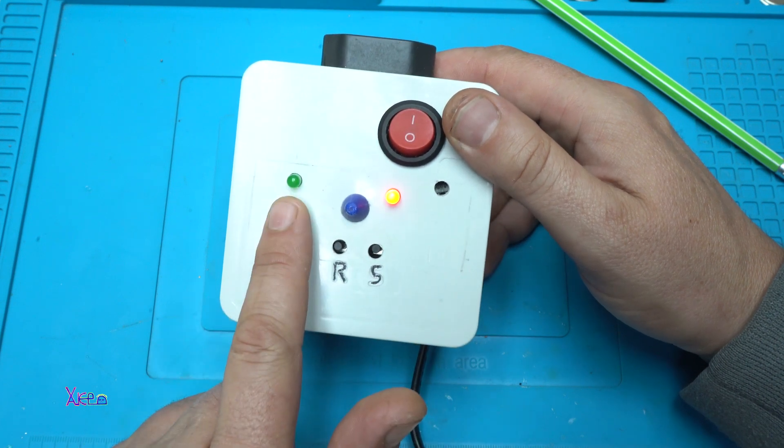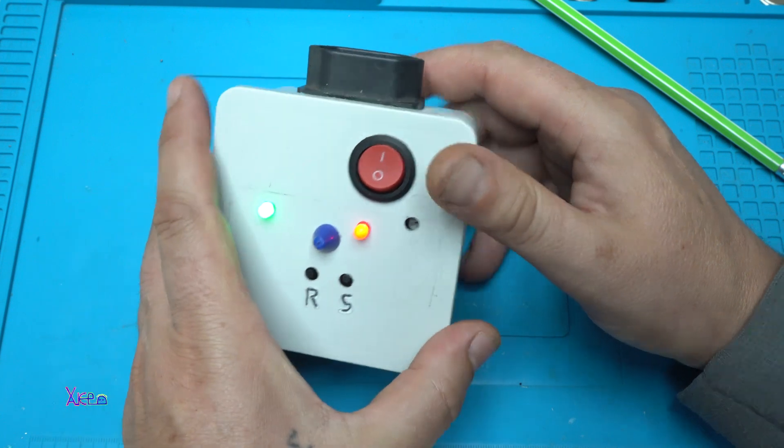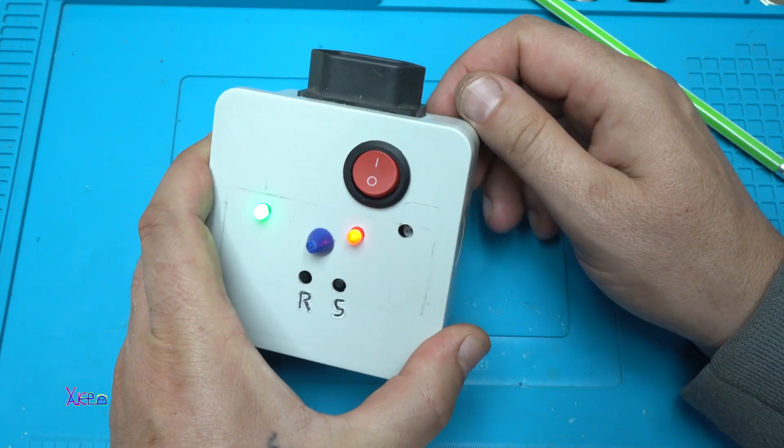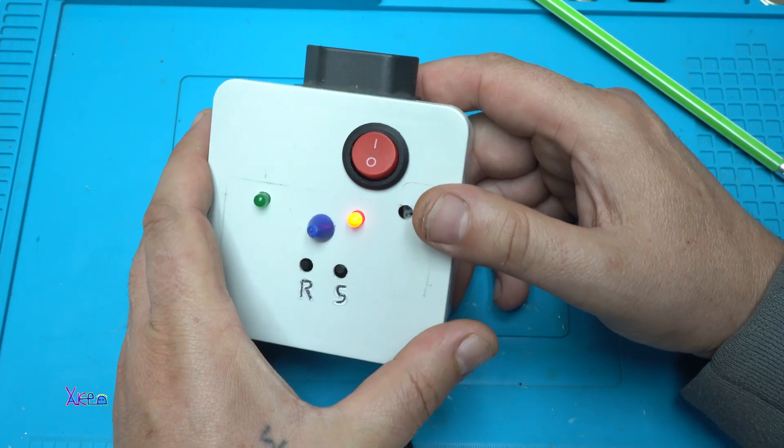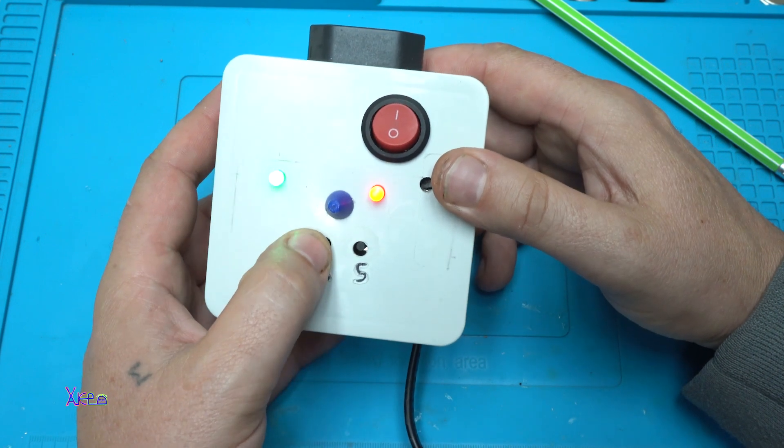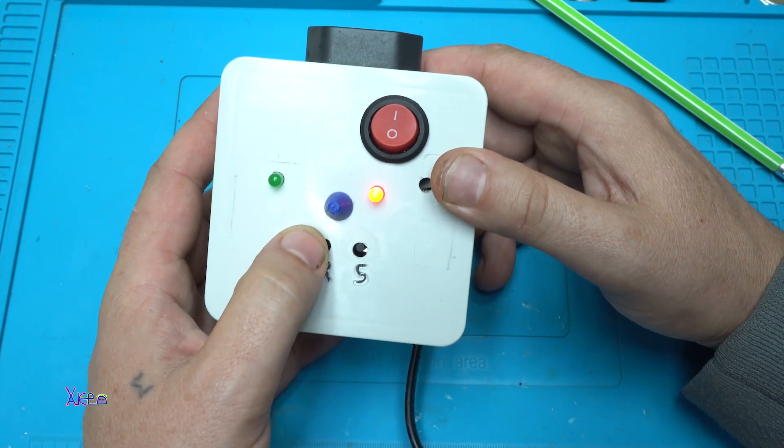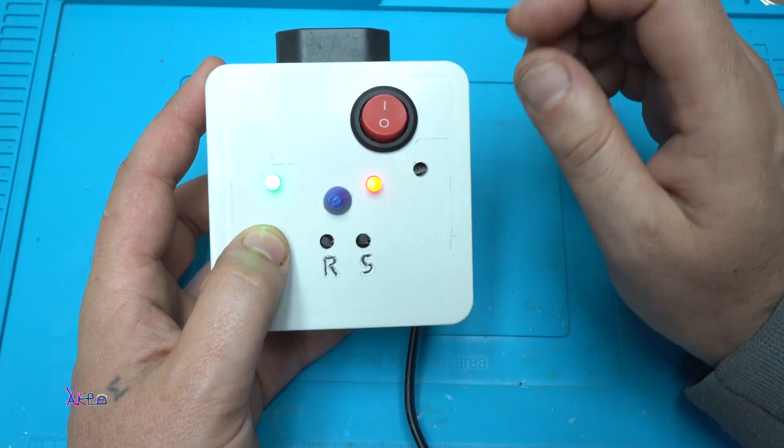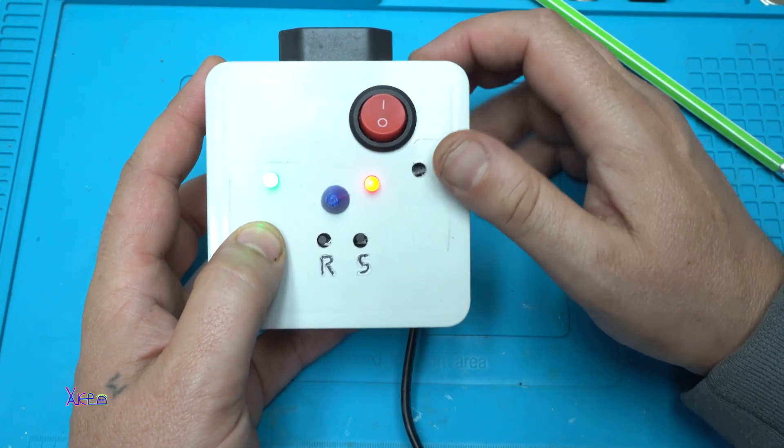We have a start and reset button. When I press start, the green LED starts blinking, meaning that this socket is giving AC voltage. And I can reset it manually like this anytime, or we are going to wait 30 minutes to automatically turn it off.